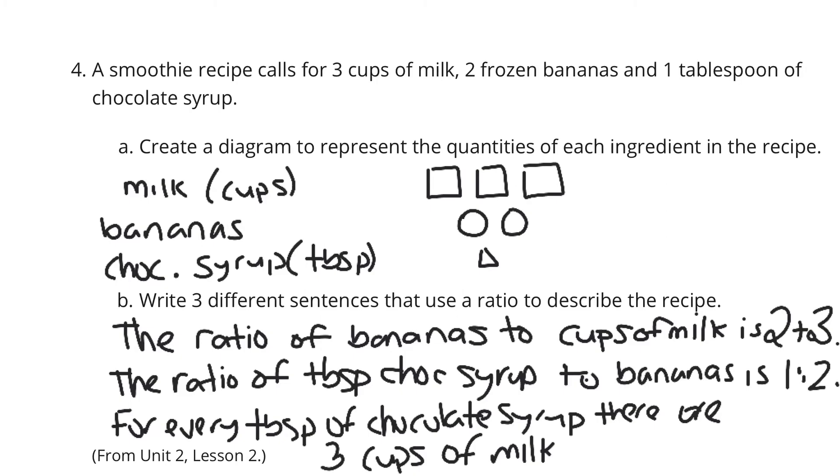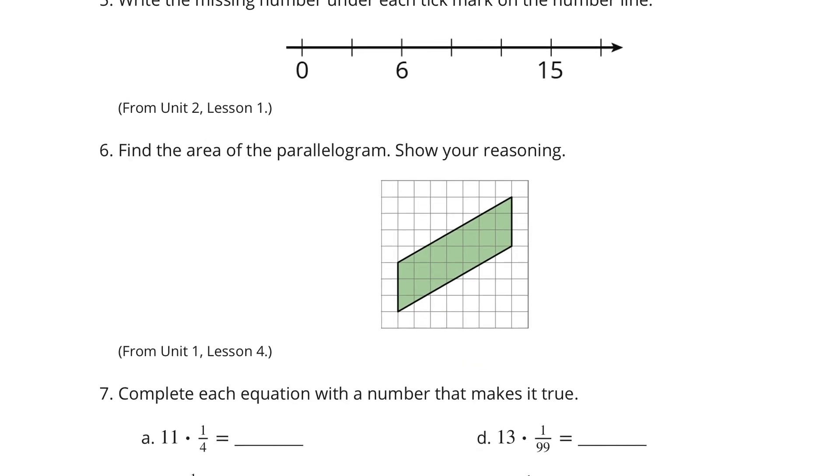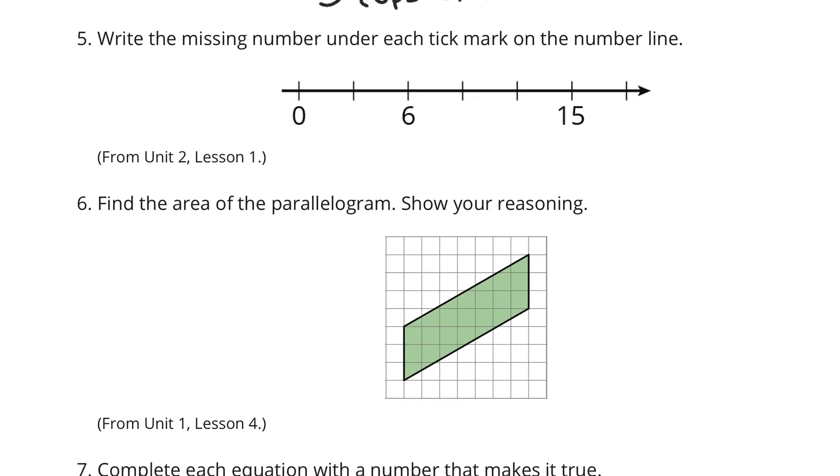All right, let's continue on now to question five. Write the missing number under each tick mark on the number line. Well, it looks like we're counting here by six, and half of six is three. Zero, three, six, add three, nine, twelve, fifteen, eighteen. So each of these is increasing by three.